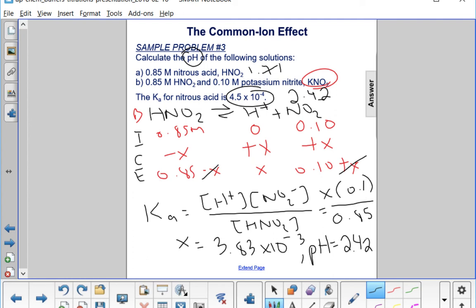As expected, again remember that the equilibrium is shifting to the left when you add that initial concentration of nitrite ion, decreasing the H+ concentration and increasing the pH.